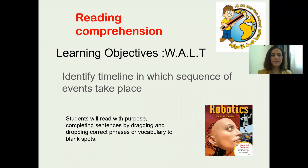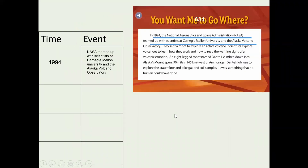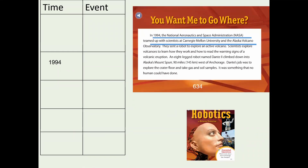Second part of our lesson. Learning objectives: we are learning to identify a timeline in which a sequence of events takes place. We will learn today how to create a timeline. You will read the paragraph and identify the events that happened on a certain date. You will find the answer to 'when' and 'what happened,' then write the year under 'time' and the event under 'event.' Let's listen to this paragraph together.